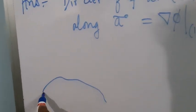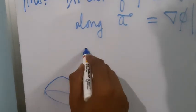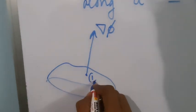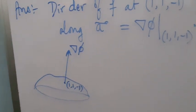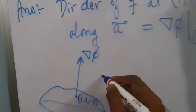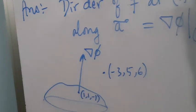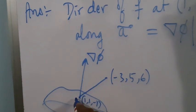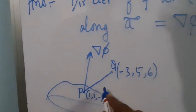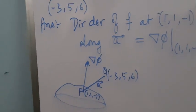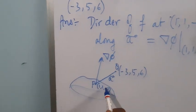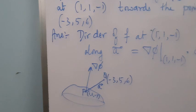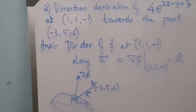If we draw a diagram — say we have a surface, and this point is (1,1,-1) with grad f shown, and the point (-3,5,6) is another point — we need to find the directional derivative of grad φ along the vector joining these two points, say P and Q, so vector a = vector PQ. The first step is to find grad φ at (1,1,-1), then use the law of addition of vectors to find vector a, and then compute the directional derivative of φ along a.